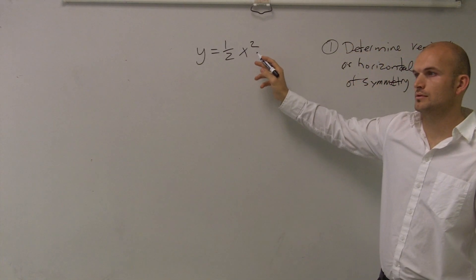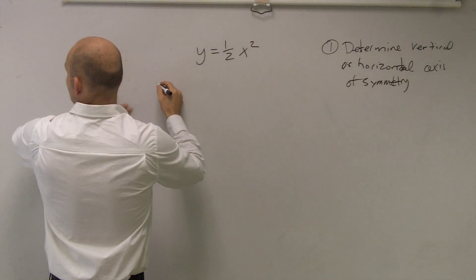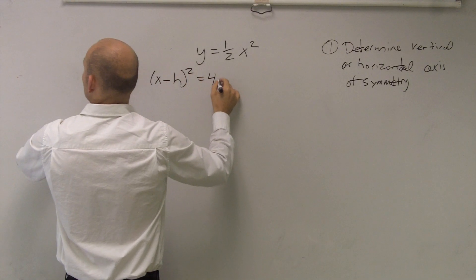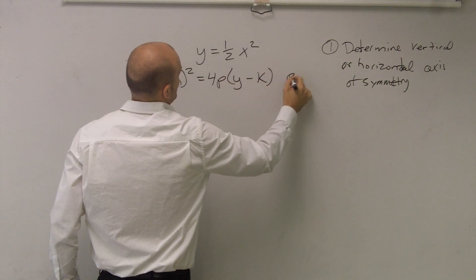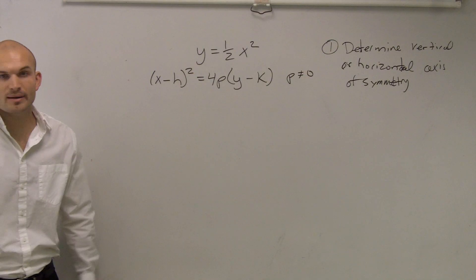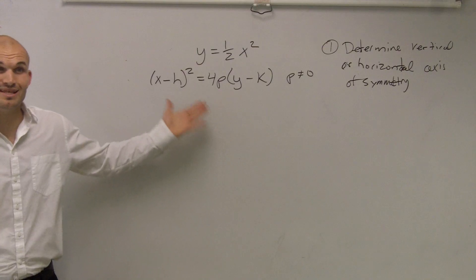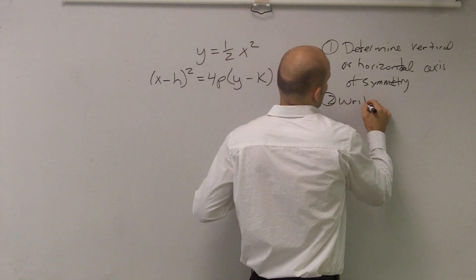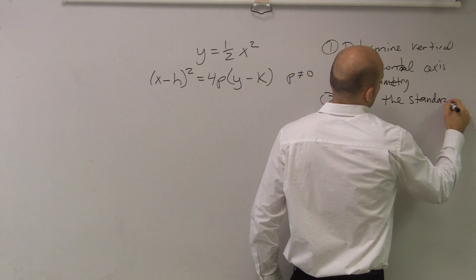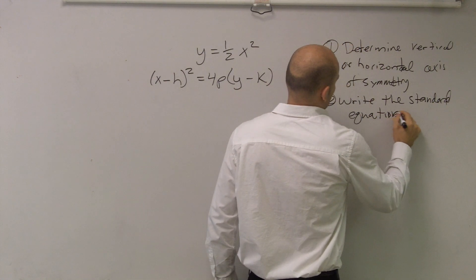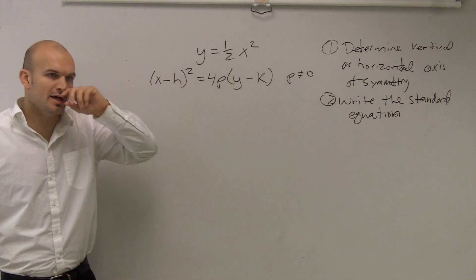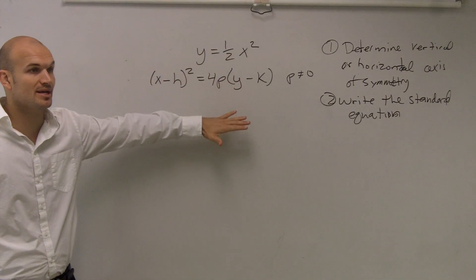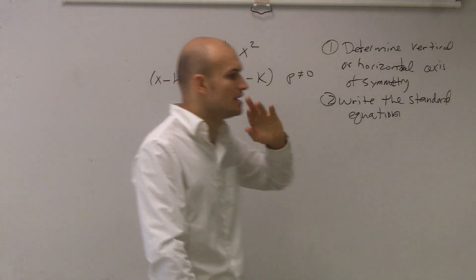Because I have an x squared — that's how I know it's vertical. So the first thing is just to determine if it's horizontal or vertical. Why do I need to determine that? Because there are two different formulas: one for vertical and one for horizontal. The next step is to write the standard equation. It's important for you guys to notice first and write it down — this is going to be a vertical parabola, either opening up or opening down, with a vertical axis of symmetry.